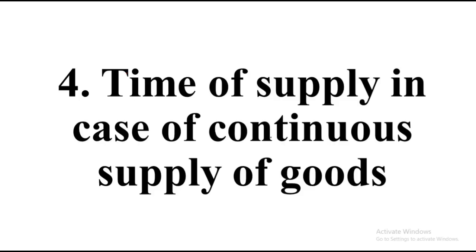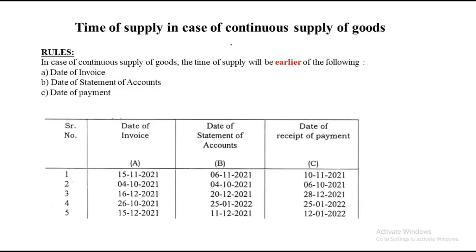Fourth type: time of supply in case of continuous supply of goods. The moment you see 'date of statement of account' in the question, remember it is continuous supply of goods. The time of supply will be the earliest of three dates: date of invoice, date of statement of account, and date of receipt of payment. Whichever is earliest becomes your time of supply.